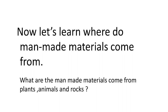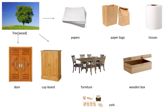Man-made materials come from plants, animals and rocks. We make paper, paper bags, tissues, dough, cupboard, furniture, wooden box and cork from wood.